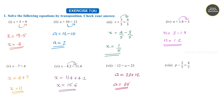Question number 8: p minus 2 by 7 is equal to 4 by 7. So this can be written as p is equal to 4 by 7 plus 2 by 7, that is, p is equal to 6 by 7.